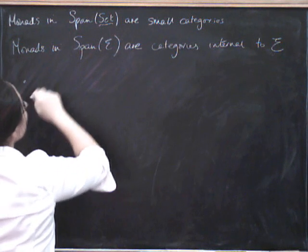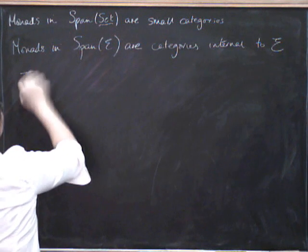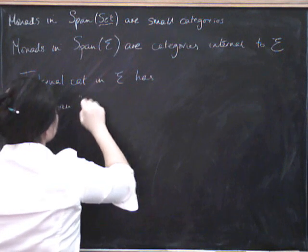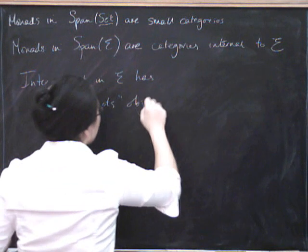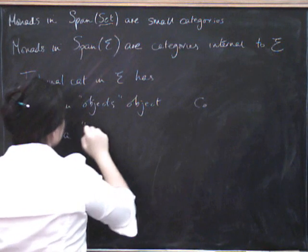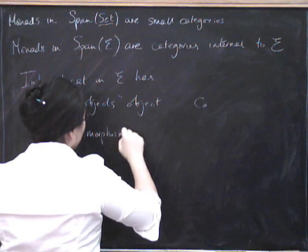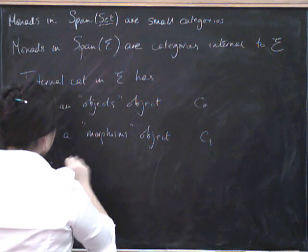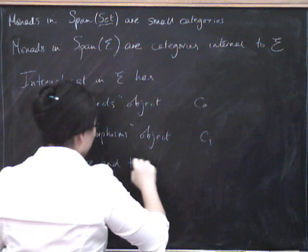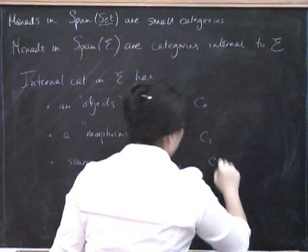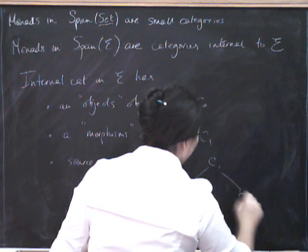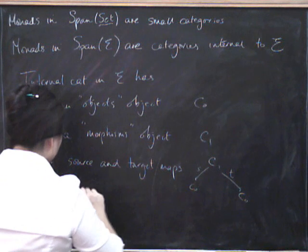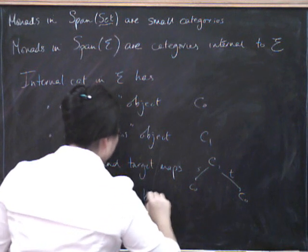Which is, you've got to have an object's object. So what's a category internal to E? An internal category in E has an object's object C0, a morphism's object C1, together with source and target maps, just exactly as we had before. And then, composition is given by that pullback we just had. We have identity and composition as before and the usual axioms.